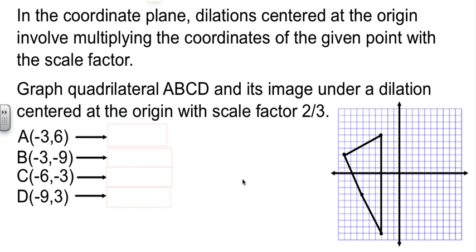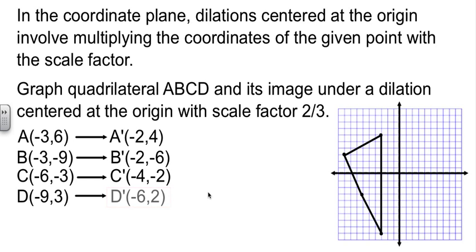All right. Now our job is to find the dilation of this with a scale factor of two-thirds. So the idea now is we're going to take each one of these values and multiply it by two-thirds. So two-thirds times negative three-sixths would be negative two-four. I'm trusting you to be able to use your calculator to generate these if you can't just generate them from your head.